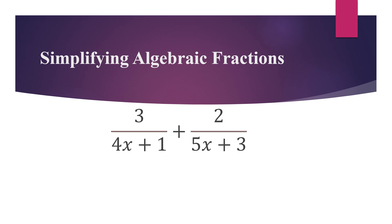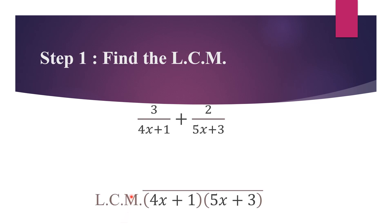The algebraic fractions here are 3 all over (4x + 1) plus 2 all over (5x + 3). The first thing that we will do is find the LCM by multiplying the denominators together, giving us an LCM of (4x + 1)(5x + 3). This is the LCM — the first step in simplifying this algebraic fraction.